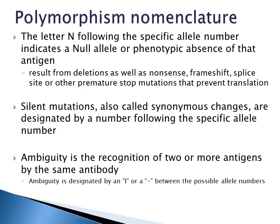Silent mutations are also called synonymous changes, which are designated by a number following the specific allele number. Ambiguity is the recognition of two or more antigens by the same antibody so that the exact allele can't be called. Ambiguity is designated either by an eye or a dash between the possible allele numbers.